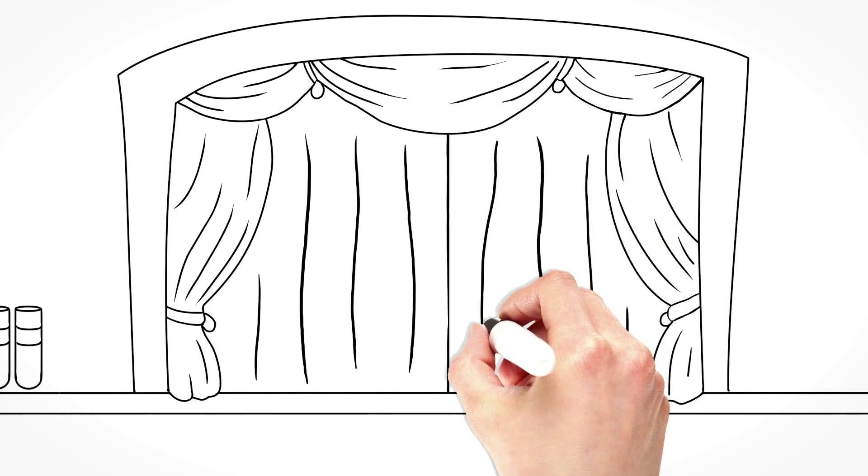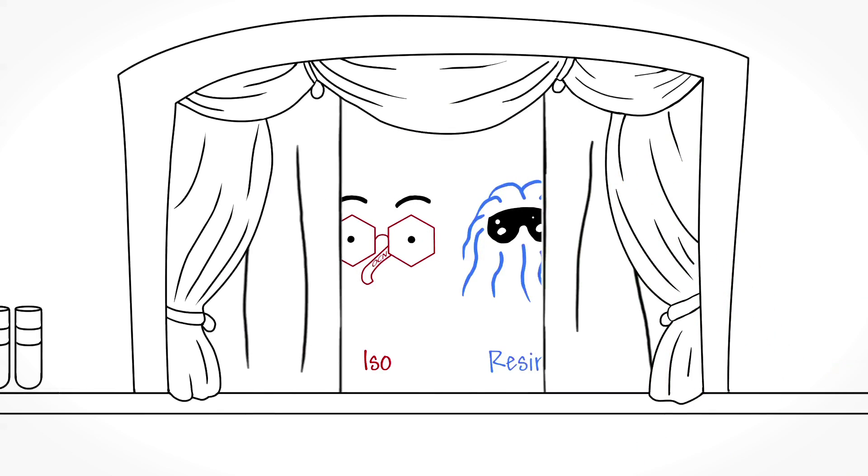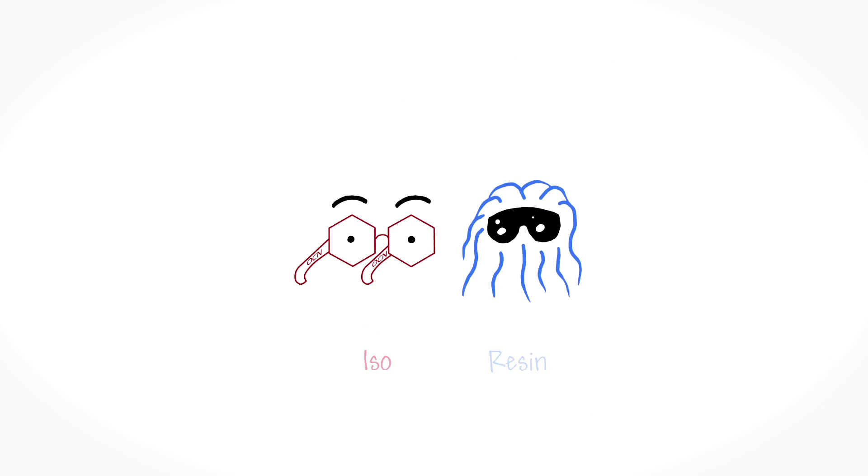First, let's introduce you to two of our leading characters: isocyanates, or ISO, and resin.